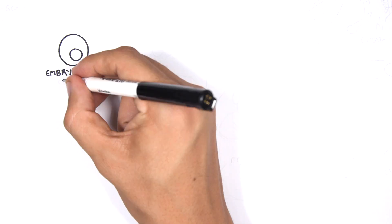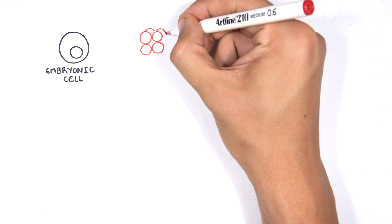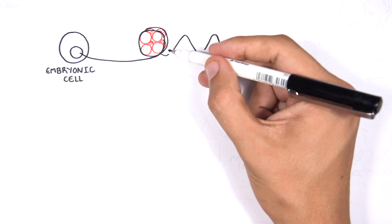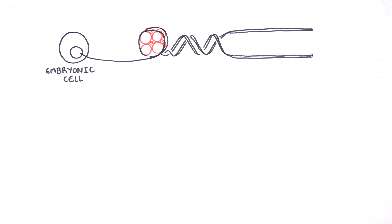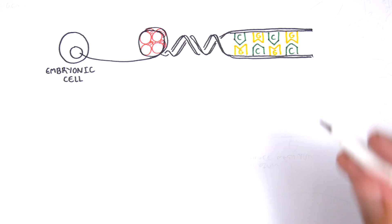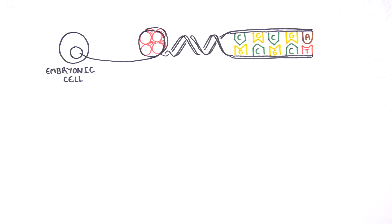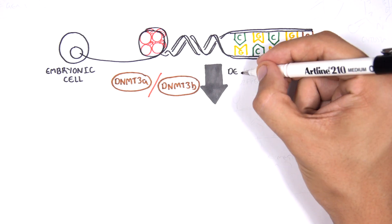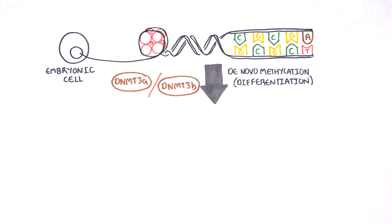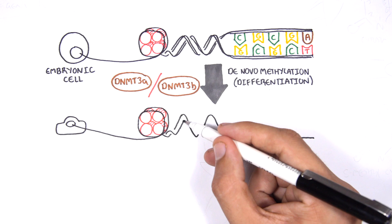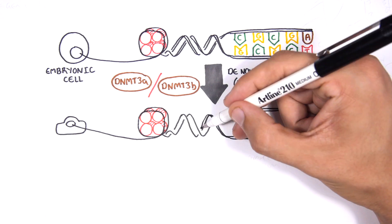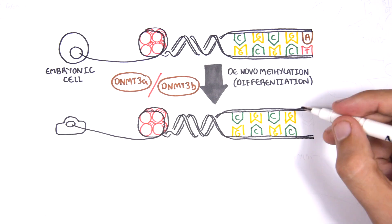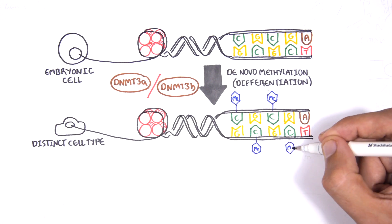Here we are looking at an early embryonic cell, and we are pulling out its DNA, which is wrapped around histone octamers known as nucleosomes. Following fertilization, DNMT3A and DNMT3B are responsible for de novo methylation, allowing embryonic cells to differentiate into a cell type — for example, a skin cell.